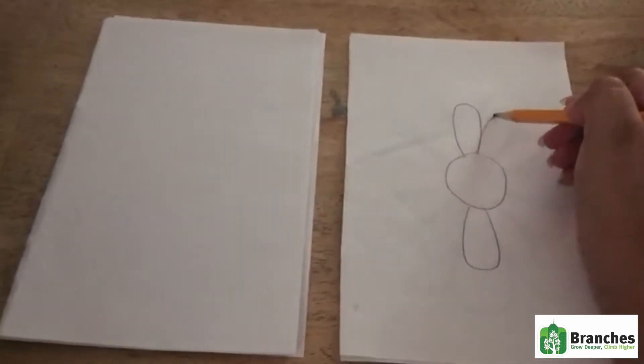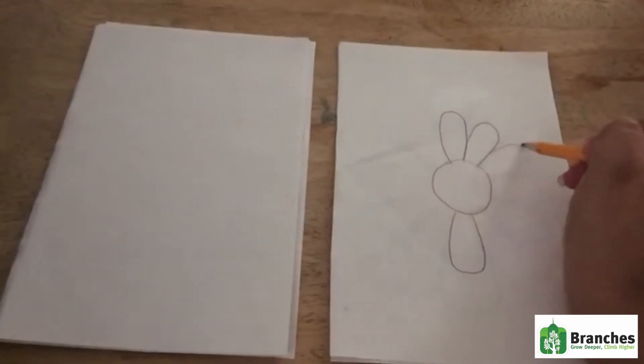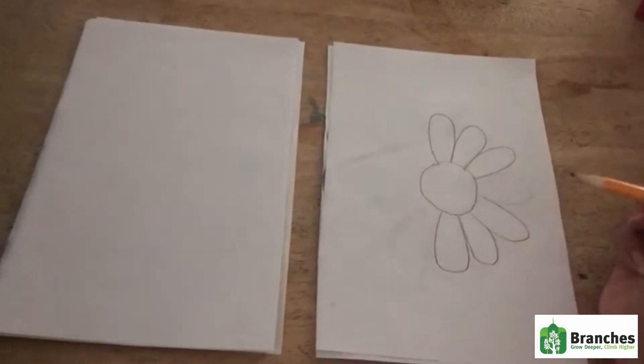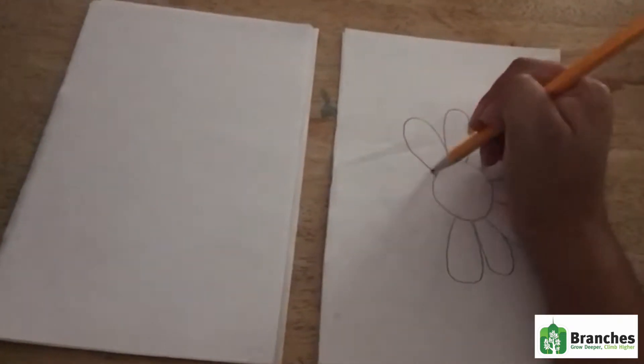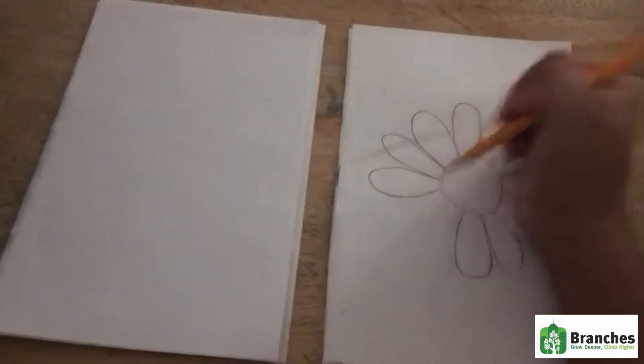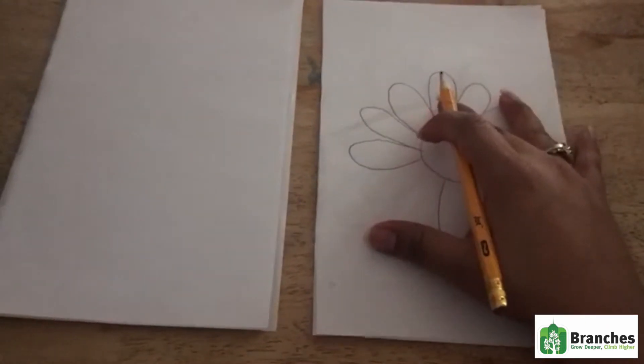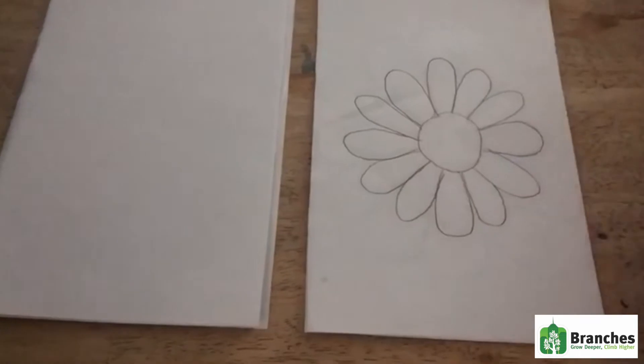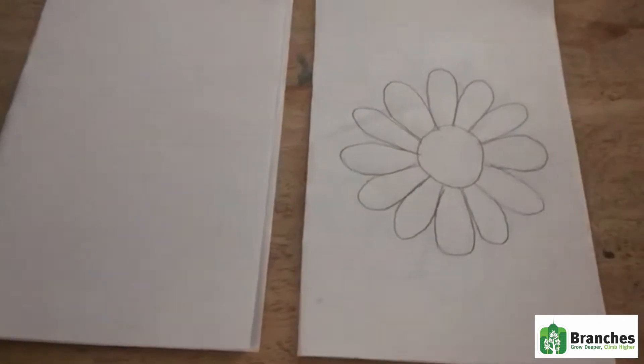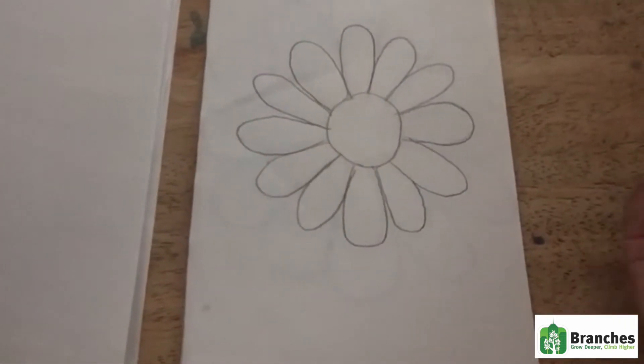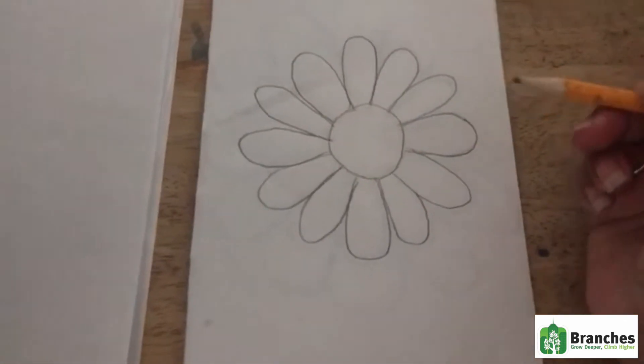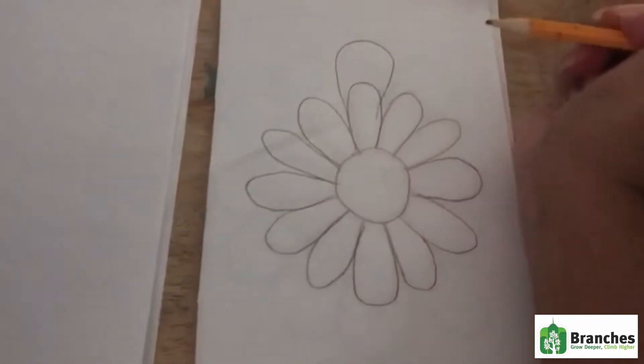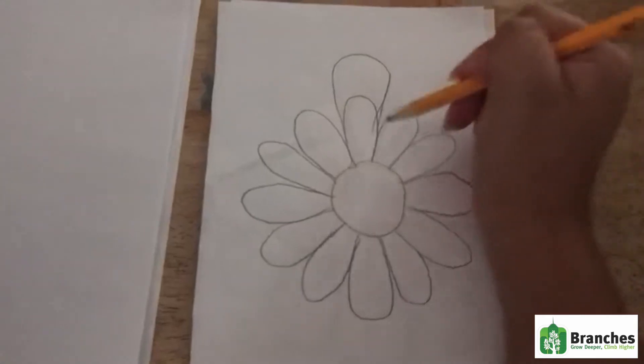Continue to trace them until you have twelve petals. Now I'm not doing a very good job at tracing but the point is that they're petals, right? Once you've drawn your twelve petals, you're gonna draw twelve more petals but on top of those.